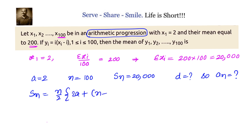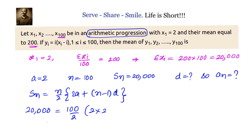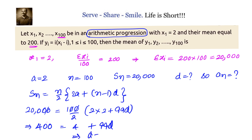We write Sn equals n by 2 into 2a plus n minus 1 into d. Substituting Sn equals 20,000, n equals 100, and a equals 2, we get: 400 equals 4 plus 99d, so 396 equals 99d, giving d equals 4.